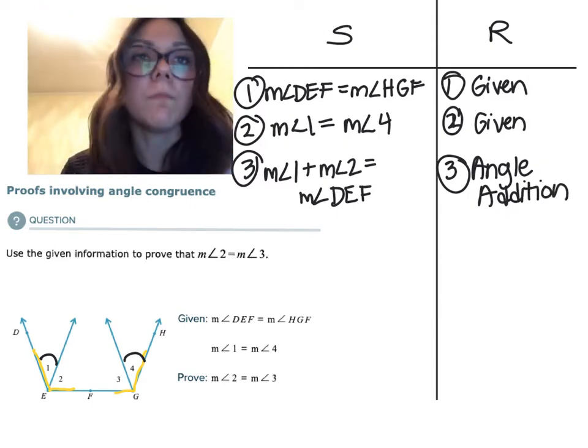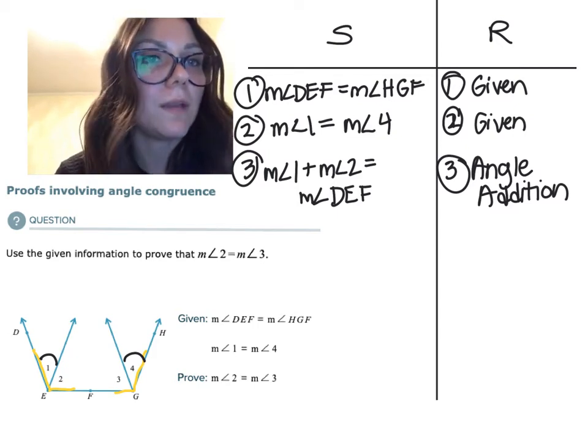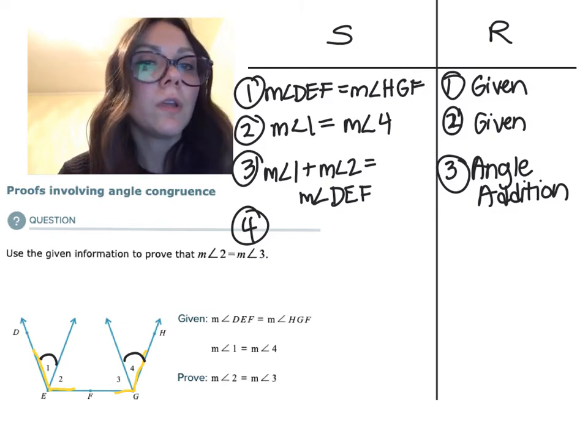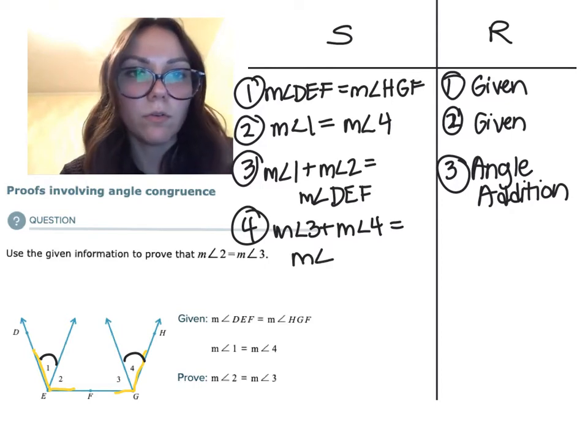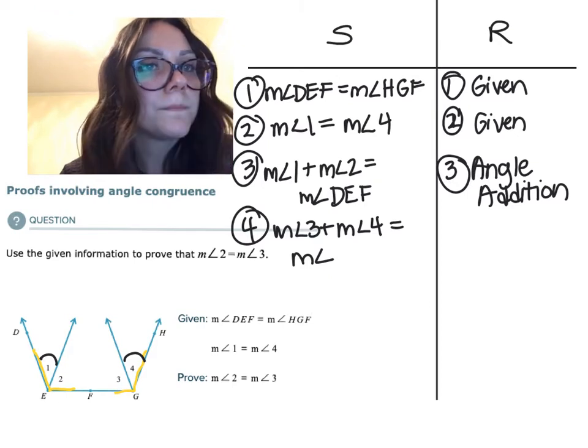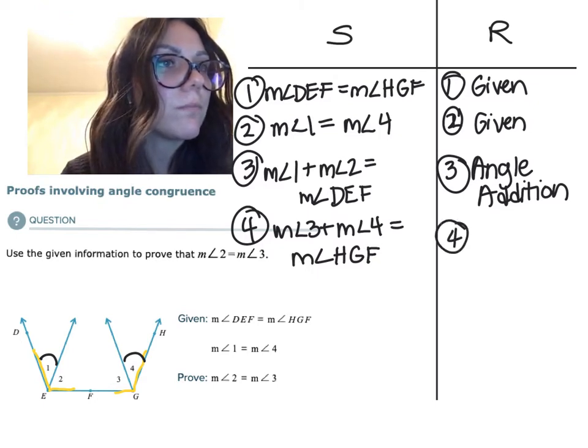We call it angle addition postulate. ALEX is going to call it angle addition property. Same difference, right? Okay, let's do the same thing over there. So we would also have measure of angle three plus measure of angle four equals the measure of angle HGF. Also by the angle addition postulate or property.